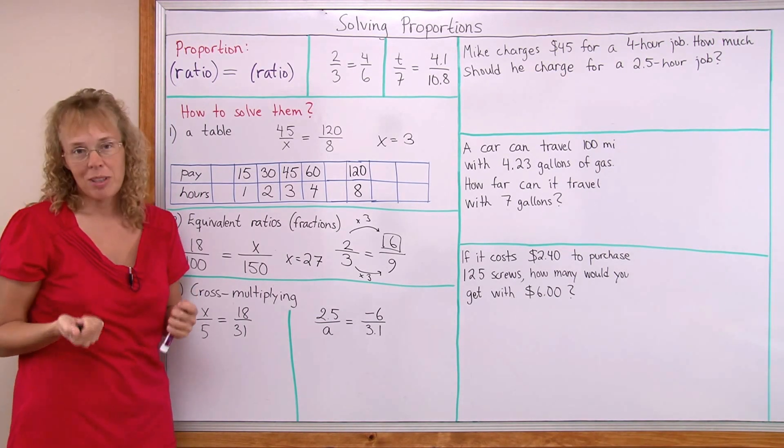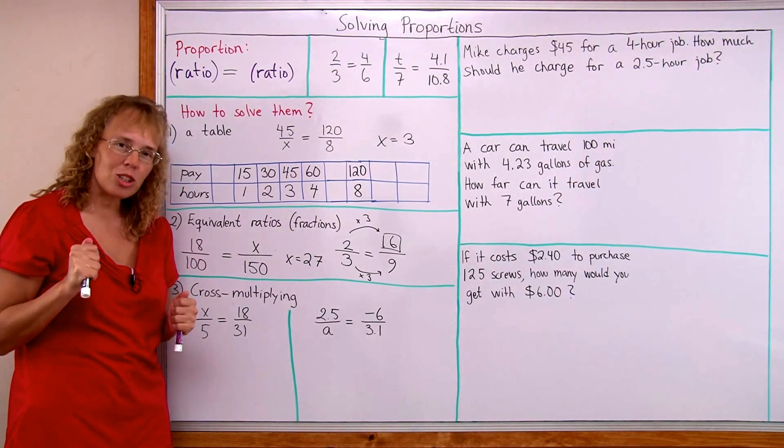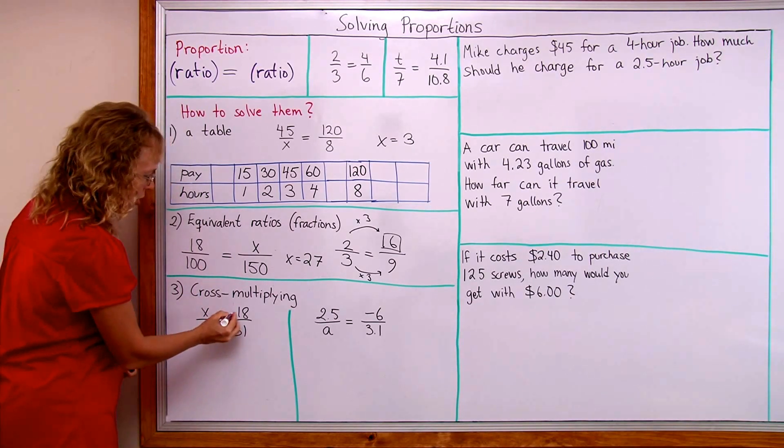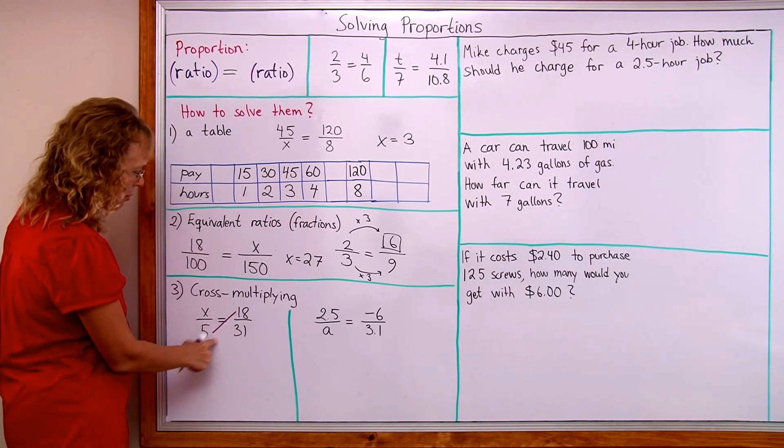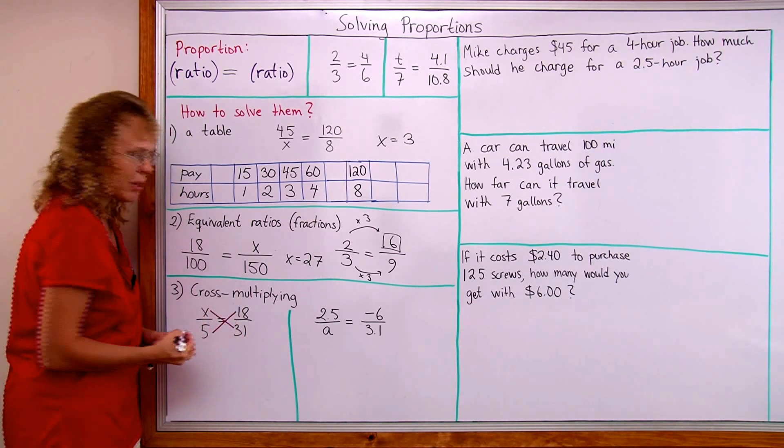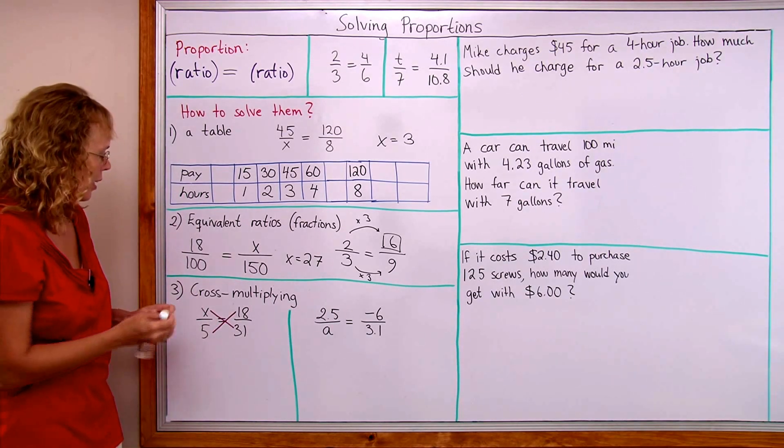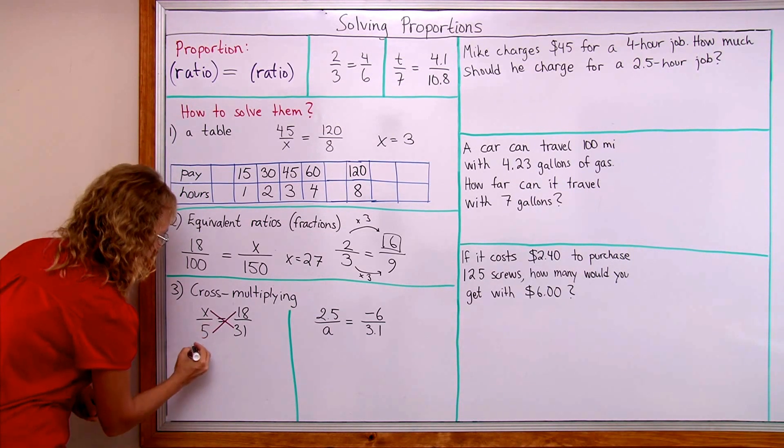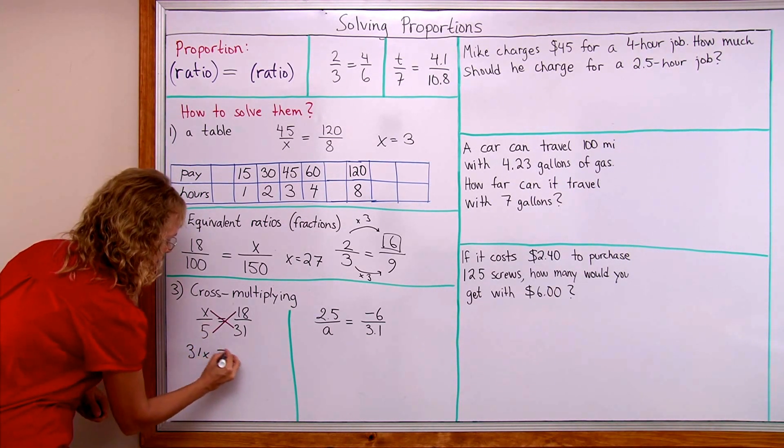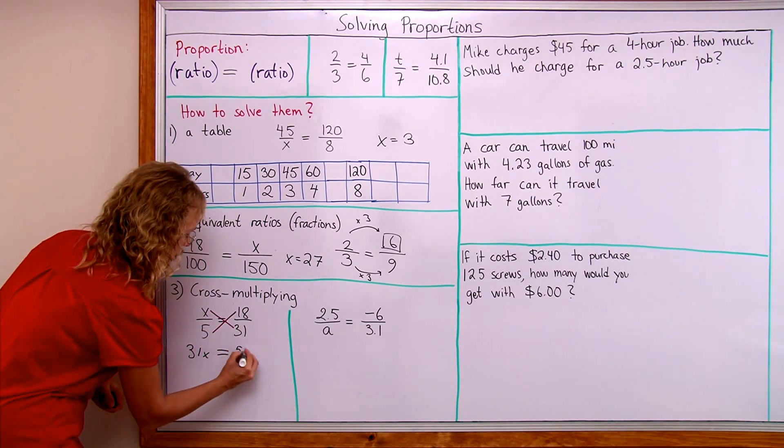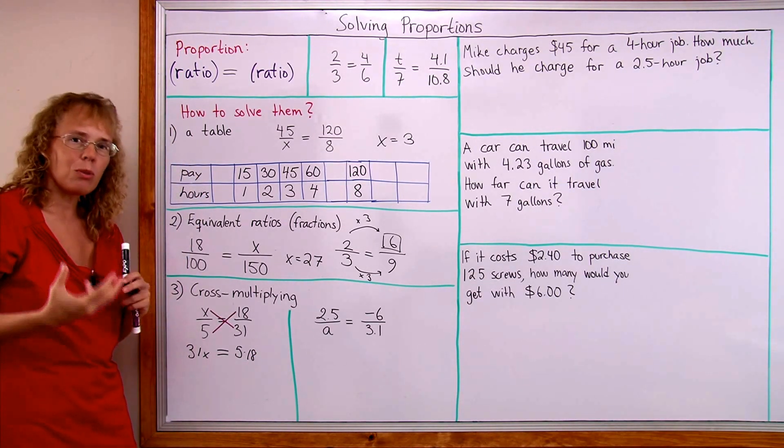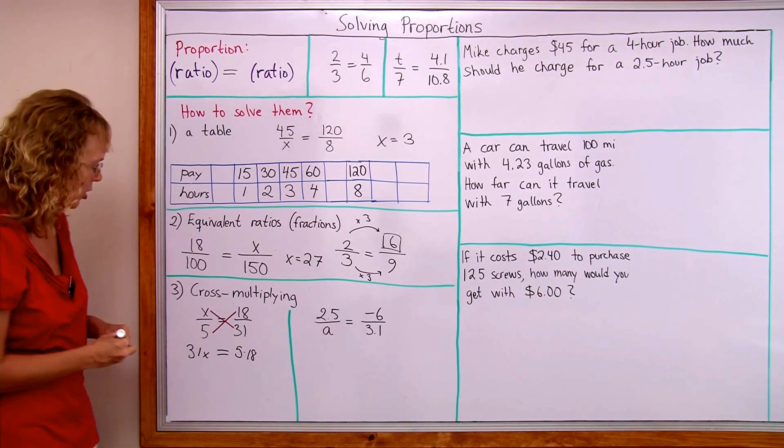And now lastly, the main way to solve proportion is by cross multiplying. Now that means that we multiply criss-cross. 5 gets multiplied by 18 and then X gets multiplied by 31. And those are equal. In other words, I get 31 times X is equal to 5 times 18. Like that. And now I solve this equation using normal techniques for solving equations.